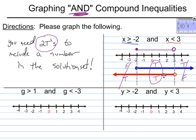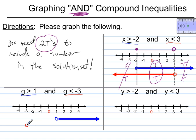Let's move on to another example using the same steps. This one says g is greater than 1 AND g is less than negative 3. For g is greater than 1, we start at 1 with an open dot and graph all the numbers to the right. For g is less than negative 3, we start at negative 3 with an open dot and graph all the numbers to the left.